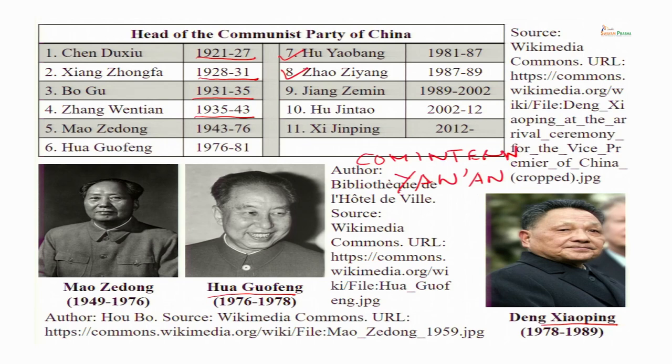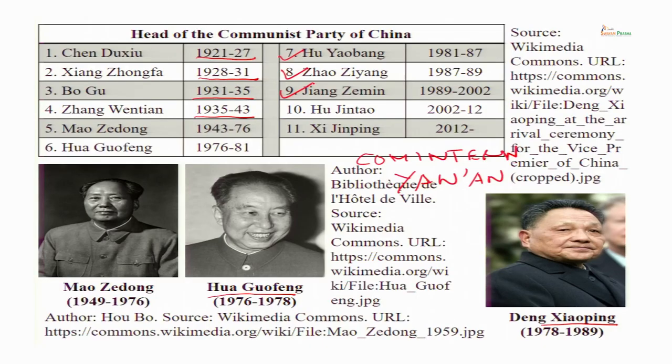Instead, the leader of the Shanghai branch of the party, Jiang Zemin, was made the new General Secretary of the Communist Party. Unlike the previous general secretaries, Jiang Zemin was also allowed to become the paramount leader. He became the paramount leader in 1989.